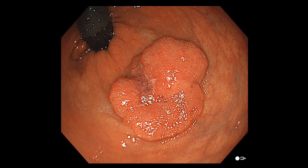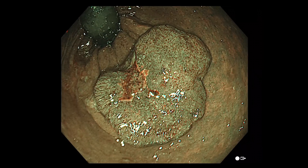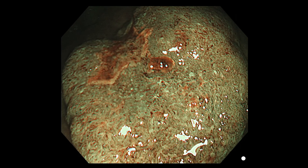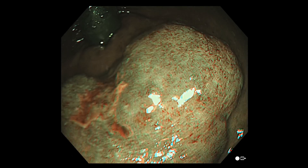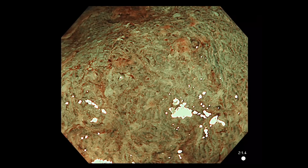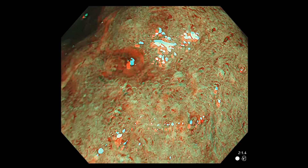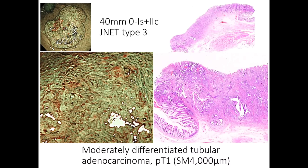This is a case in the rectum and the diameter of this lesion is approximately 40 mm. The tumour has a large thickened depressed area. This lesion has loose vessel areas and some thick vessels are interrupted. The structure of the surface is destroyed and amorphous — these features are typical for J-Net Type 3. J-Net Type 3 is an indication of deep invasive cancer, therefore surgical resection was chosen for this patient. The histopathological findings revealed moderately differentiated adenocarcinoma with submucosal deep invasion; the invasion depth was 4,000 micrometres, so the treatment was appropriate.